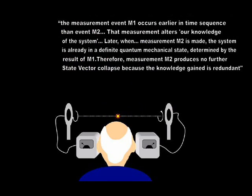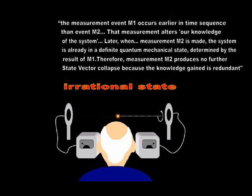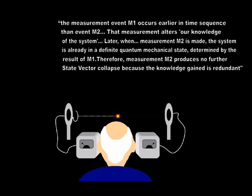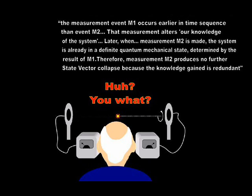A champion of this retarded theory, John Cramer, uses it to explain EPR. And remember, kids, the measurement event M1 occurs earlier in time sequence than does event M2. The measurement alters our knowledge of the system. Later, when measurement M2 is made, the system is already in a definite super-de-duper quantum mechanical state, determined by the result of M1. Therefore, measurement M2 produces no further state vector collapse because the knowledge gained is redundant.